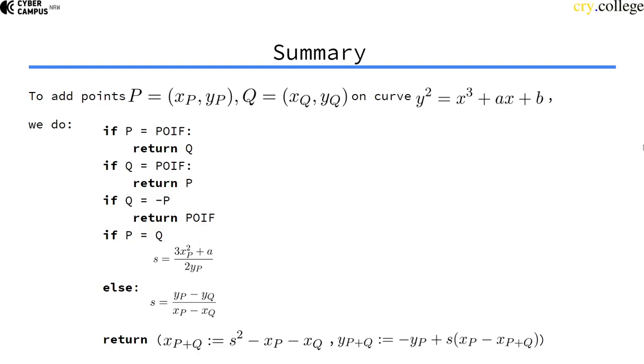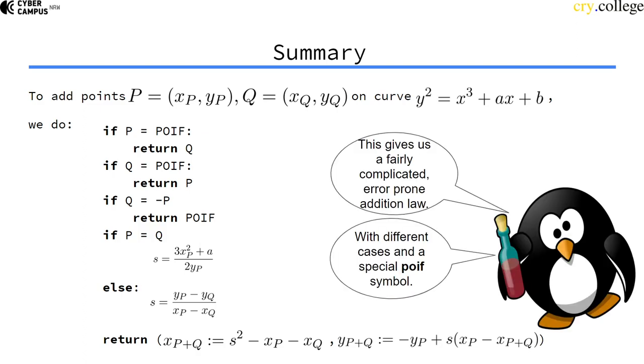So, now you might know why elliptic curves tend to be seen as mysterious objects because this group that we have defined is based on point addition. And point addition seems pretty complicated because we have a lot of different cases and we have to check for things and we have to handle this weird point at infinity that we are not really sure what it is.